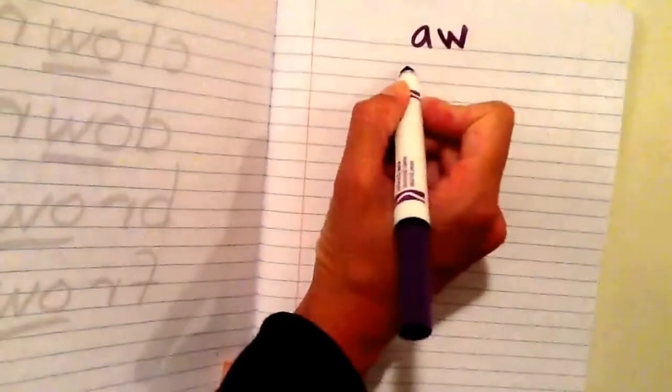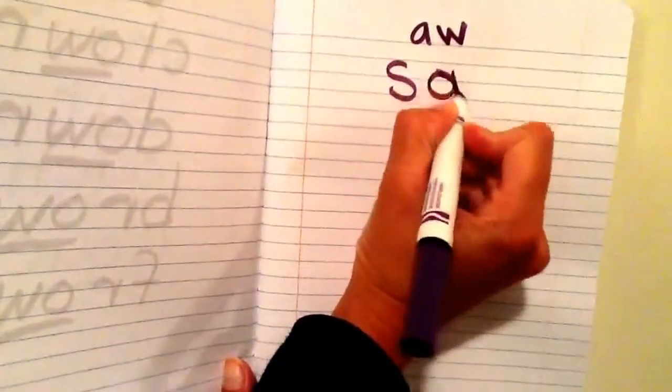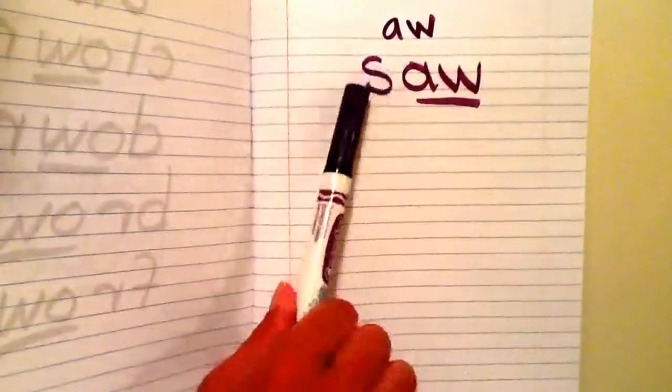The first word that we're going to write is the word saw. So I hear S at the beginning and then AW, A-W, and then I'm going to underline AW making the AW sound. Please write saw in your word study notebook: S-A-W, saw.